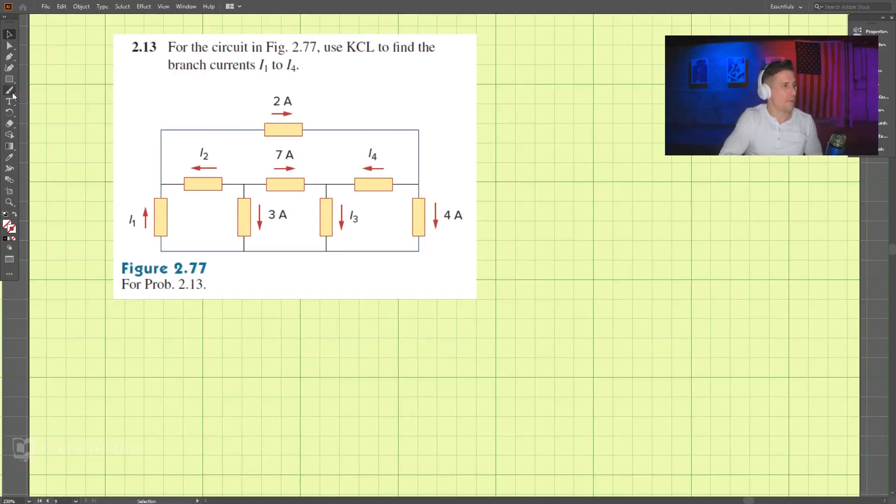Okay, let's start on this problem here. We're given a circuit and we're to use KCL, Kirchhoff's current law, to find the branch currents I1 to I4. So I1, I2, I3, I4.